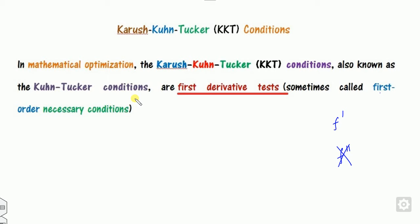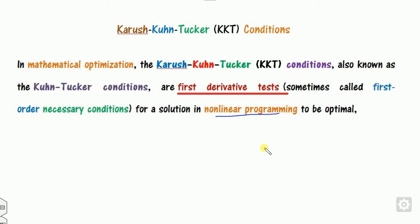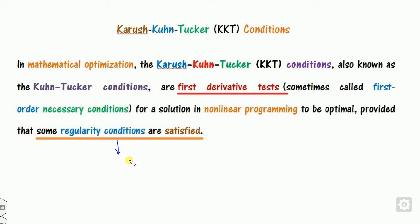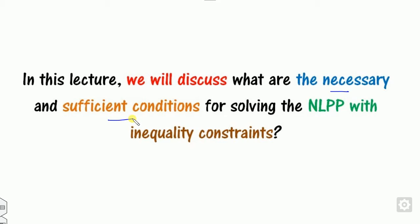Why do we use this KKT condition? It is used for finding the solution of the non-linear programming problem to be the optimal solution. Once we say that it is optimal, it will satisfy certain conditions. We will discuss what are the necessary and sufficient conditions — that is the task of this lecture. In this lecture, we will discuss the necessary and sufficient conditions for solving the non-linear programming problem with inequality constraints. Remember that this KKT condition is applicable only for inequality constraints.